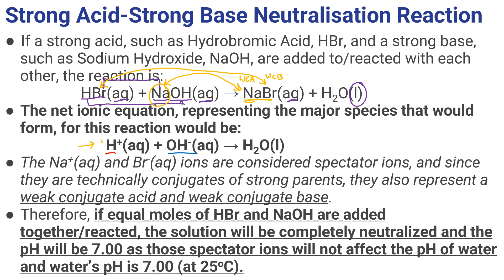Students always say acid-base neutralization pH is always 7. Well, not always — we've got to go deeper. If it is strong acid, strong base, and it's equal moles — which doesn't mean equal molarity, it means equal moles; different volumes or different molarities can still give equal moles — then the net ionic equation gives us pH 7. That's why the pH should be 7.